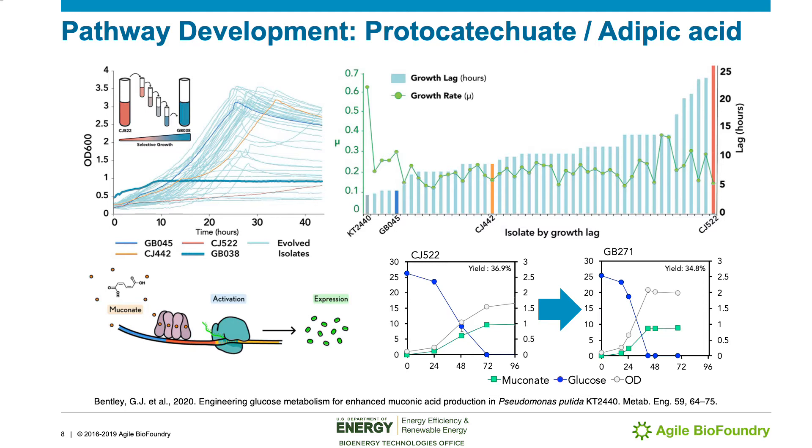The strain GB271 ultimately achieved a productivity of 0.2 grams per liter per hour, which was three times higher than CJ522, while maintaining about the same yield. Development of these strains is ongoing.